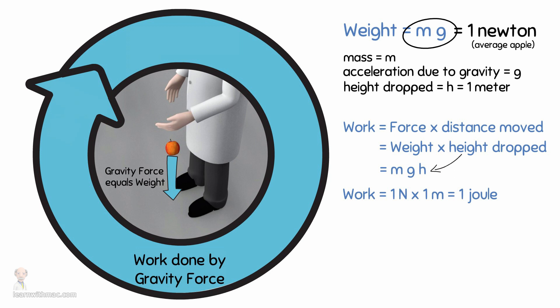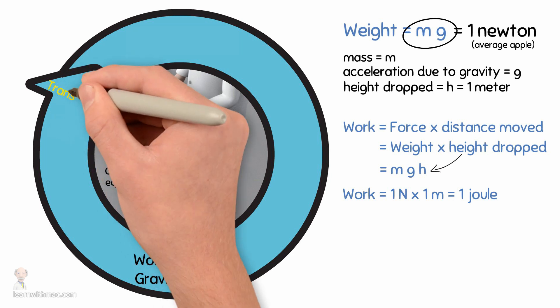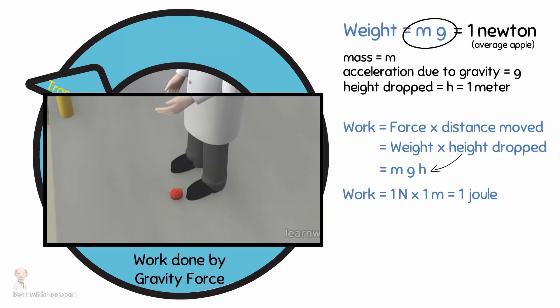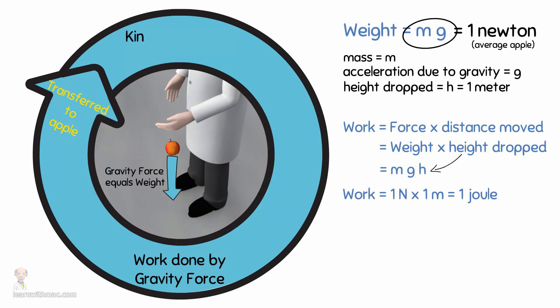Remember that energy cannot be created or destroyed, so the energy transferred from the gravity field has still to be there somewhere. Do you know where it has gone? Well it has been transferred to the apple. You can see the apple has increased its speed and this is because the kinetic energy of the apple has increased.